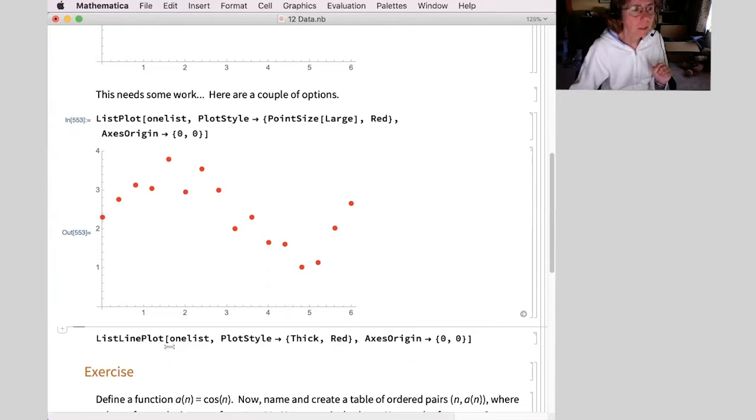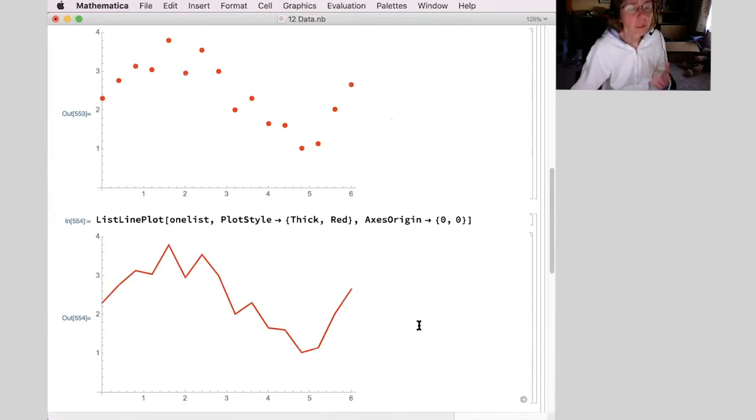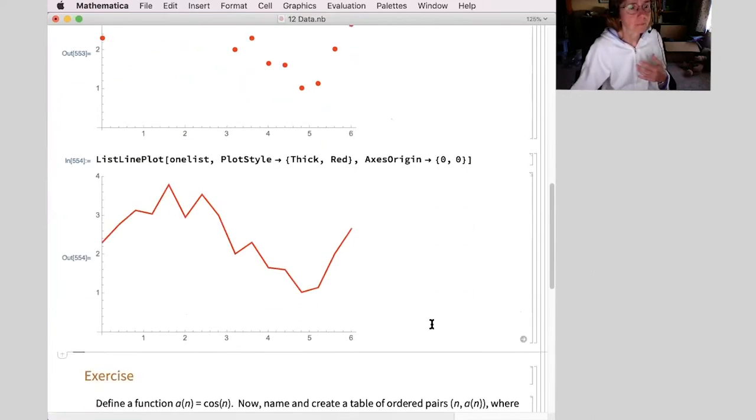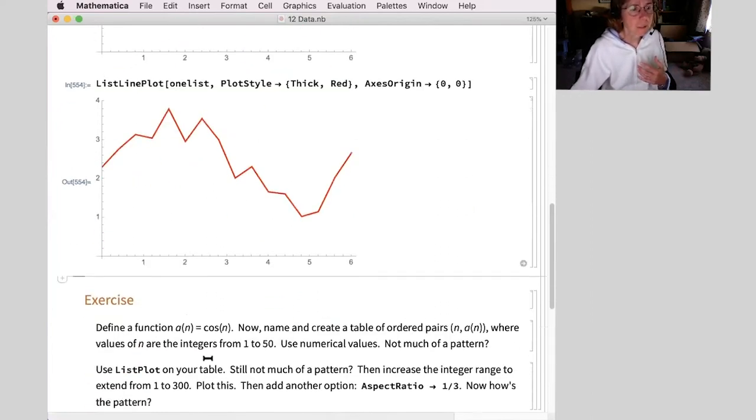A couple options in here and a different command. I'm going to put in instead of list plot, list line plot. Just joins all the ordered pairs together with lines. Plot style I can go back to thick, which I used for graphs because this has line segments. And red again. But just to give us a different view to this. A little exercise here. Putting the exercises within each section in this case.